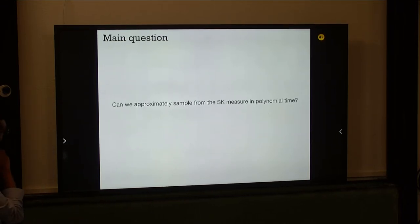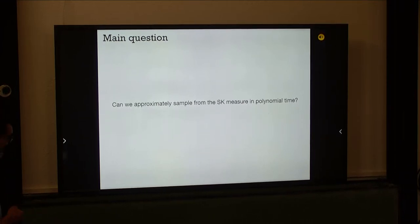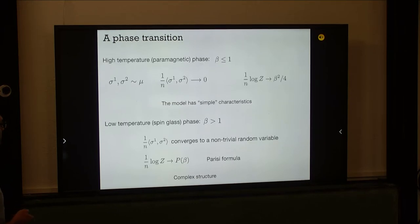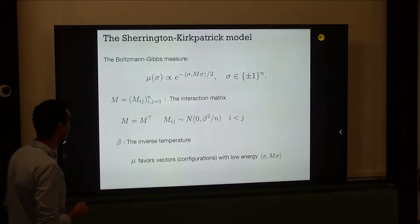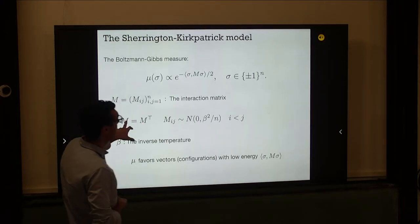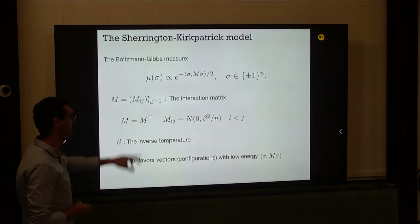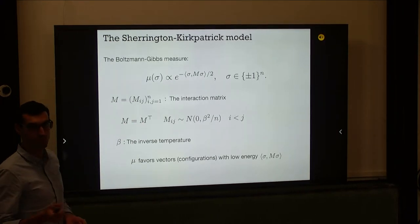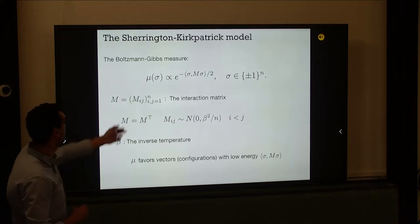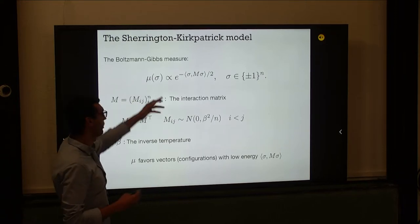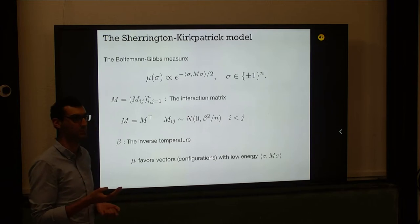The question I'll be interested in is: can we approximately sample from the SK measure in polynomial time? This is an algorithmic question. The algorithm sees M as input — given M, produce a sample on the hypercube that is close to the measure mu in law, in some distance I will specify.